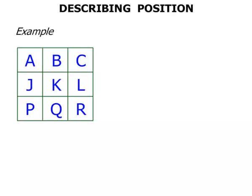We have a grid with the letters ABC, JKL and PQR. Now if we consider the letter A and we compare it to the letter B, we can say that A is next to B.